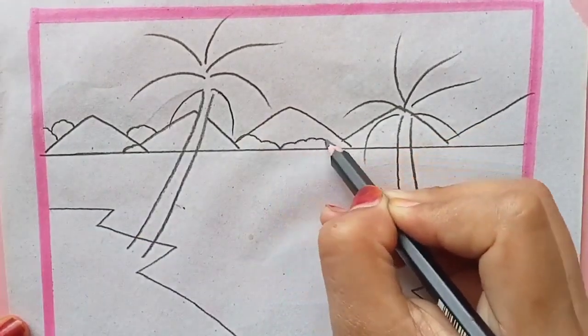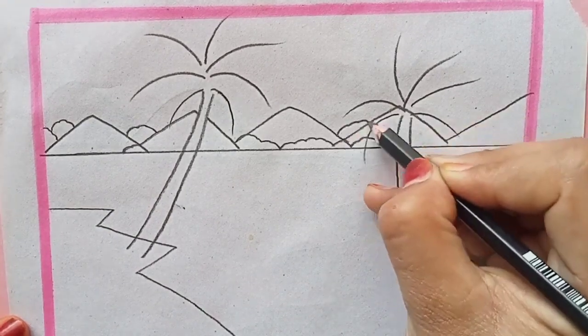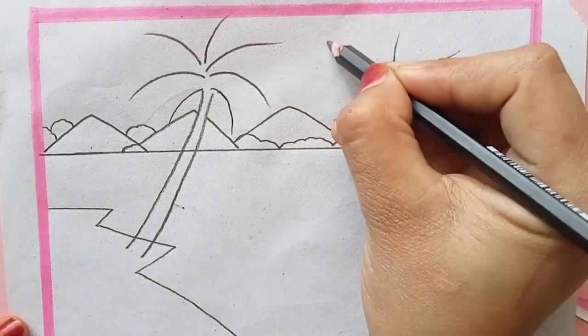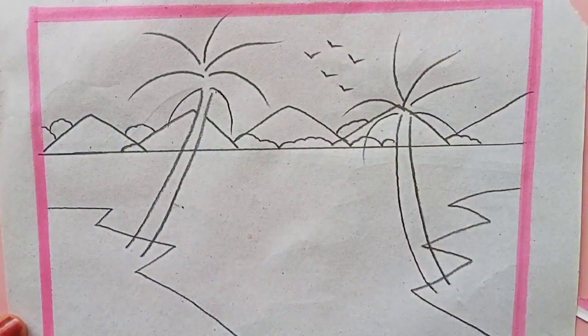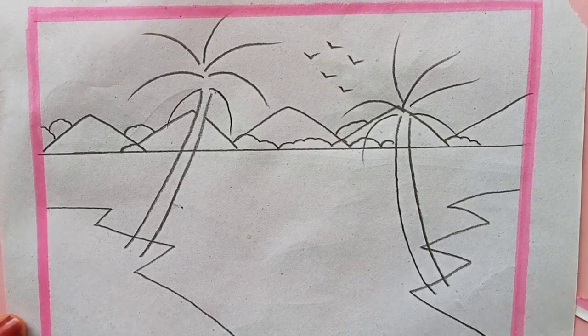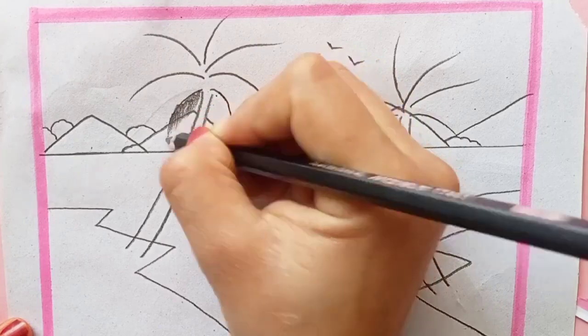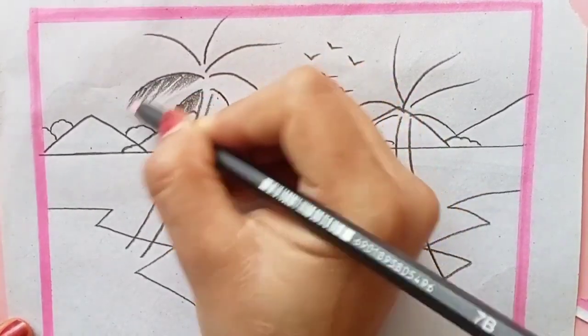Now I am shading the leaves of the tree in such a pattern, giving strokes to the branches just like this. Also I have drawn some birds in the sky and doing the same strokes method with the second tree.